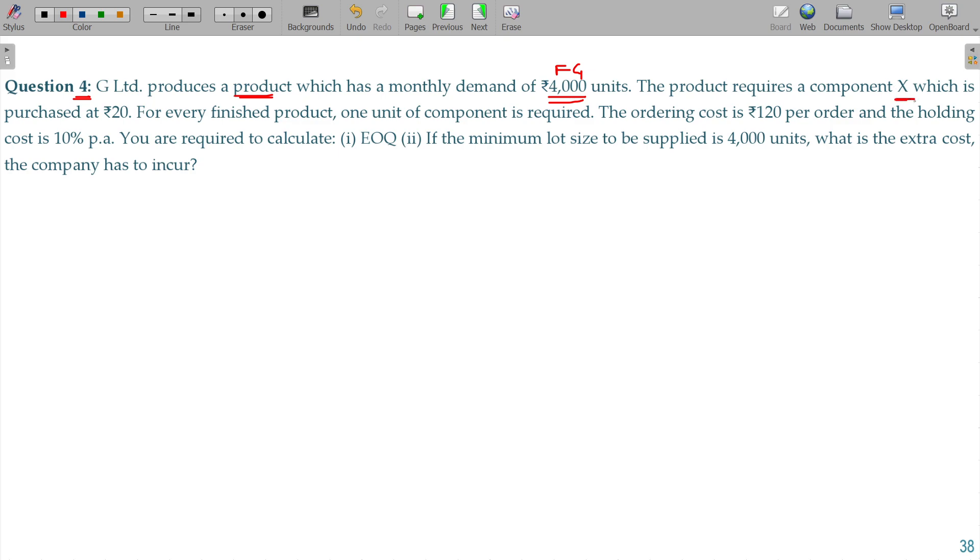The product requires component X which is purchased at rupees 20. For every finished product, one unit of component is required. Raw material - one input as well as one finished goods, one is required.